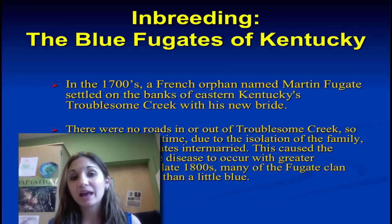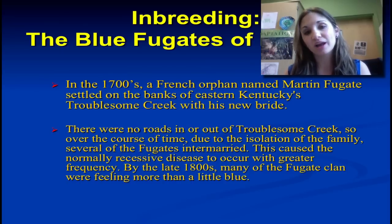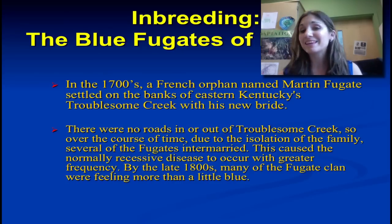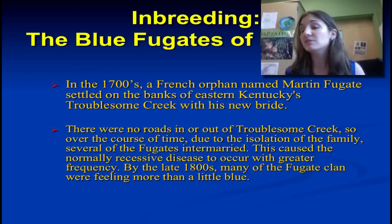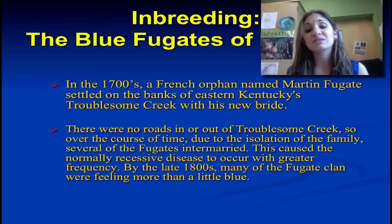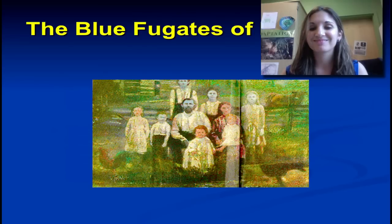A great example of inbreeding and its consequences can be seen in the Blue Fugates of Kentucky. Martin Fugate, who was an orphan, came with his bride and set up their home on the banks of Troublesome Creek. There weren't a lot of roads coming in and out, so a lot of inbreeding occurred over generations because the Fugates intermarried. There's normally a recessive disease called methemoglobinemia, and Martin carried it. Over time, more than just Martin was feeling a little bit blue — these are the Blue Fugates of Kentucky.